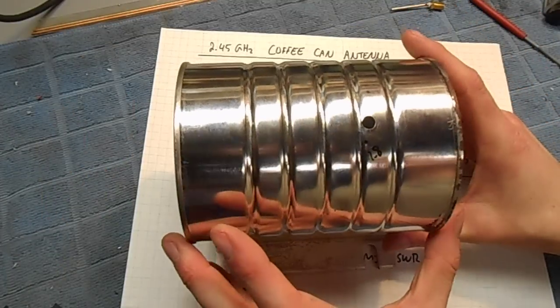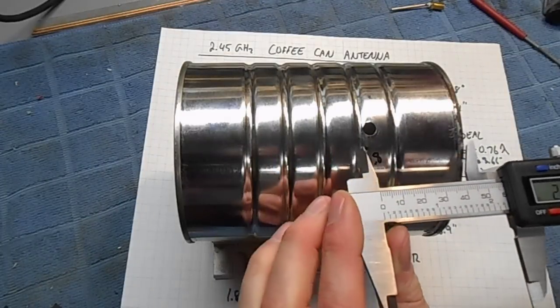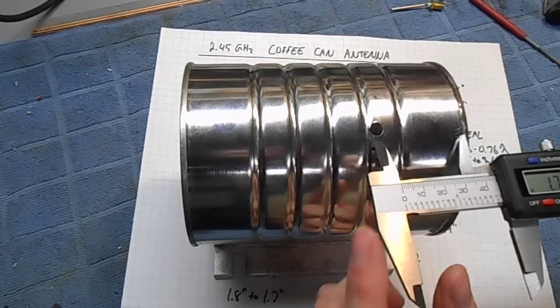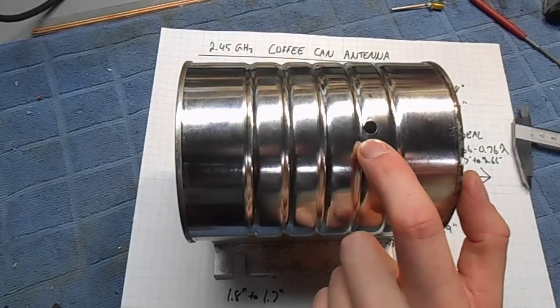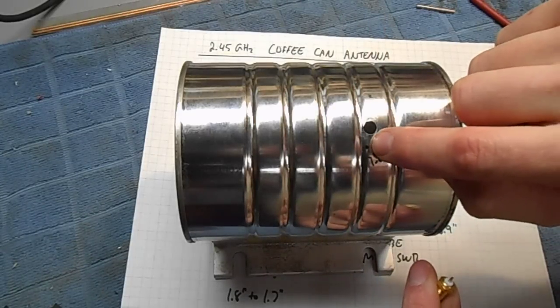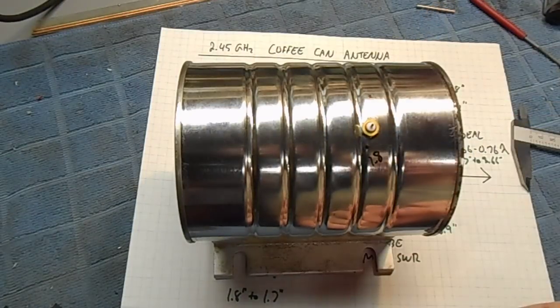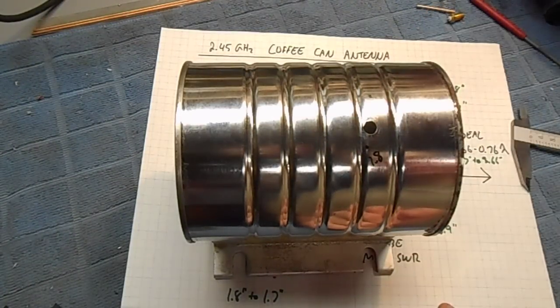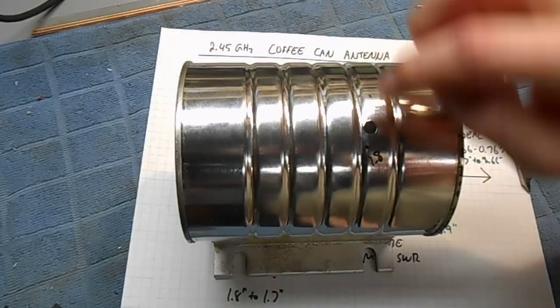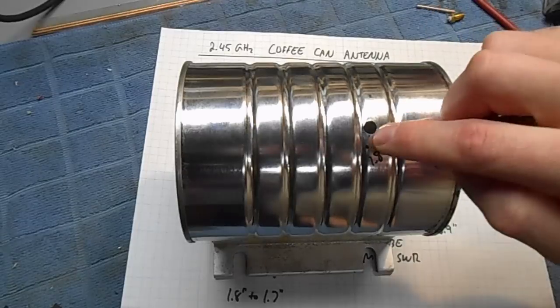To actually drill the hole, you want to mark it. On this Maxwell House brand, there's a groove. You don't want your SMA connector to line up into the groove, so I backed it off a bit. As you can see, I marked about 1.7 inches so the SMA connector will sit flat. After you mark it, you want to use a step bit to slowly drill through your quarter-inch diameter hole for the SMA connector. Using the step bit makes a nice clean round hole.